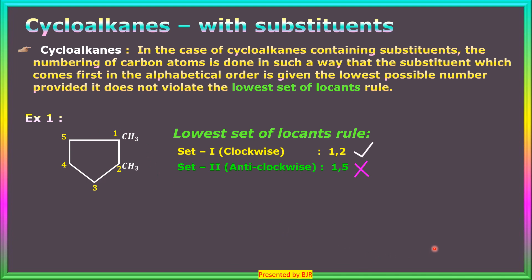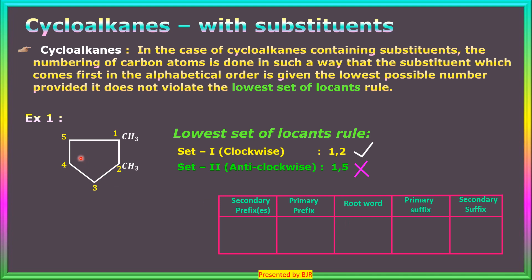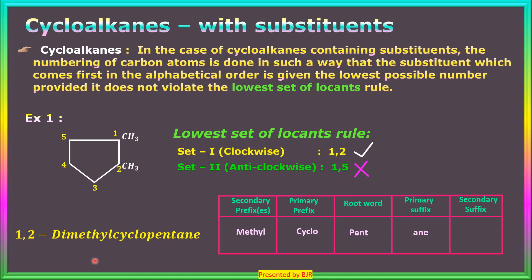In this cycloalkane, 5 carbon atoms are there, so the root word is 'pent'. Primary suffix — only single bonds, so 'ane'. No secondary suffix. Primary prefix is 'cyclo'. Secondary prefixes, i.e., substituents, are methyl groups. The first and second carbon atoms are bearing two methyl substituents. Therefore, the name of this cycloalkane is 1,2-dimethylcyclopentane.